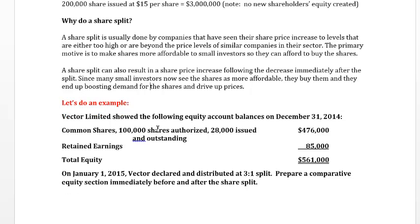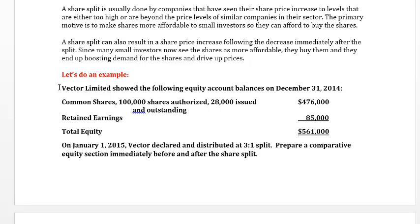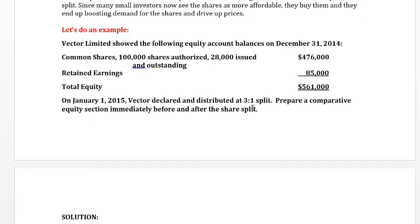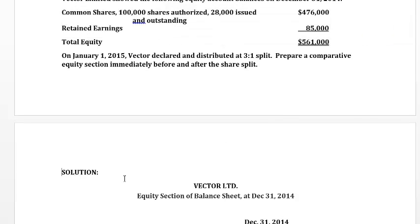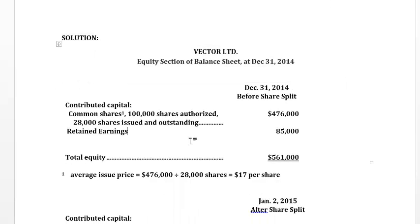Now let's look at an example to see how the share split works. We have a company called Vector Limited. Vector Limited's equity section at December 31st shows common shares authorized at 100,000, with 28,000 issued and outstanding. They've got retained earnings of $85,000, giving total equity of $561,000. The day after, Vector declared and distributed a three-for-one split.